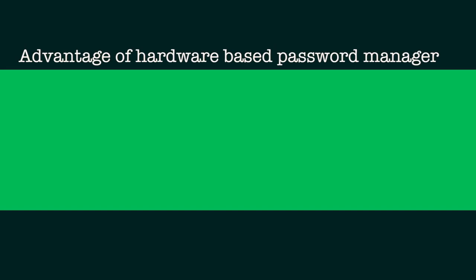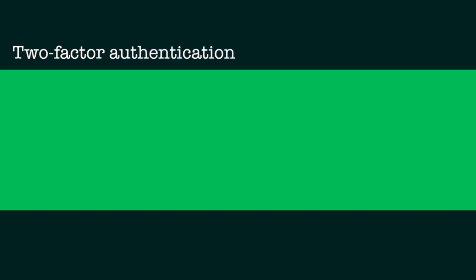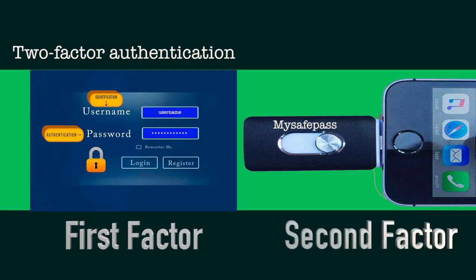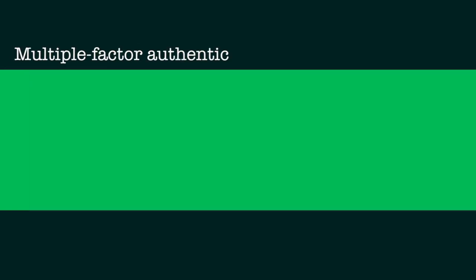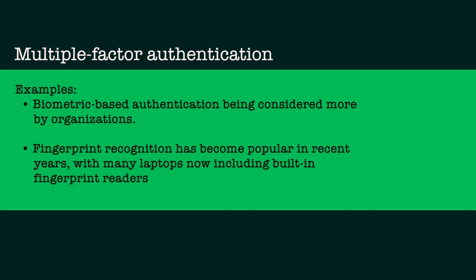Another advantage with a hardware token is that it can be combined as a two-factor authentication mechanism, so your data is even more secure. Your username is the identification part, the password is the authentication part, and when you supply that password and insert the hardware token, the hardware token becomes the second factor, making it two-factor authentication. There are also multi-factor authentication mechanisms available, but you use a particular device depending on the asset you are protecting. If you are only protecting some document file, you may use only a password and hardware token combination rather than multi-factor authentication involving biometrics, iris scans, or finger scanners.